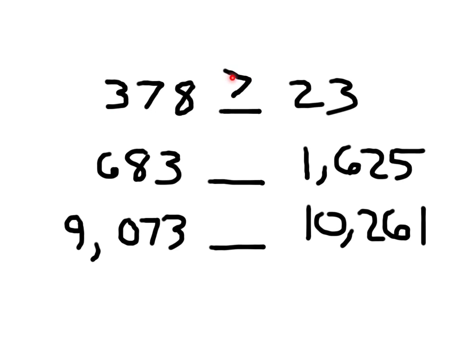The bigger part of the symbol points back toward the greater number. We can't just compare the 6 and the 1 because they are not worth the same thing. That 6 is in the hundreds place — the 6 is worth 600, whereas this 1 is worth 1,000. Whatever symbol we end up putting, we always want to read it over to make sure it looks right and sounds right. 683 is less than 1,625.